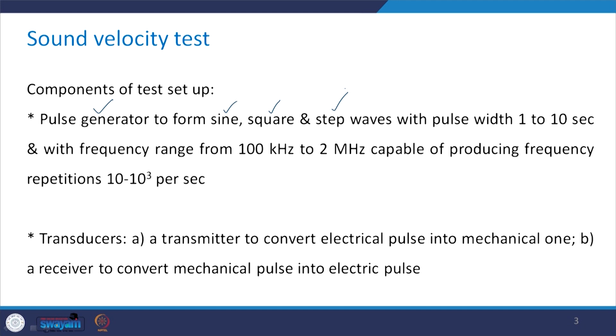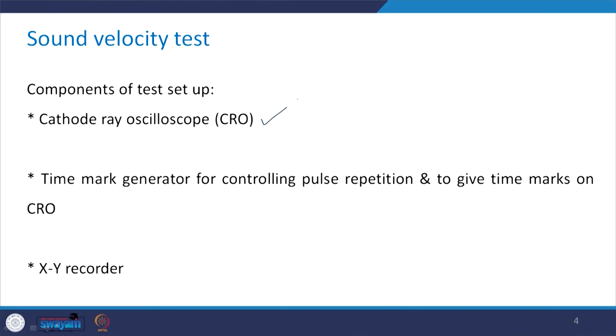Then there are transducers. The first one is a transmitter which converts the electric pulse to the mechanical pulse, and the second one is a receiver which converts the mechanical pulse into the electrical pulse. There are other components like a cathode ray oscilloscope, a time mark generator for controlling the pulse repetition and giving time marks on the oscilloscope, and an XY recorder.